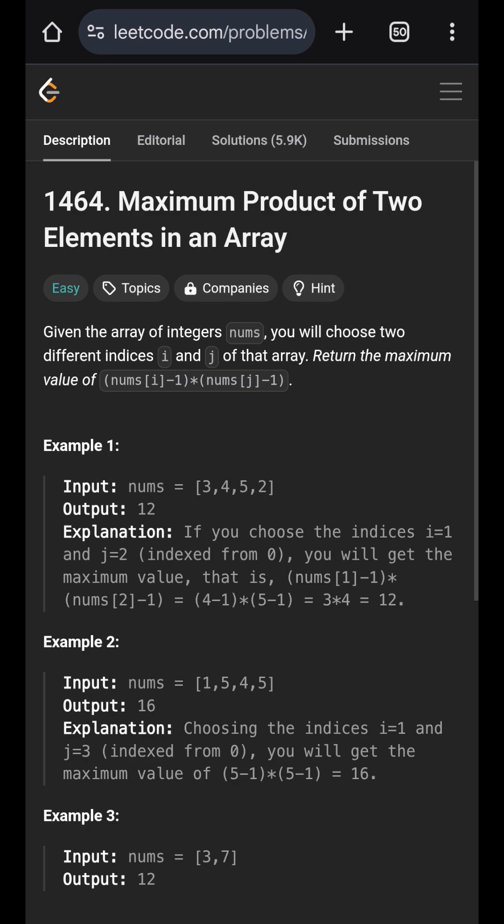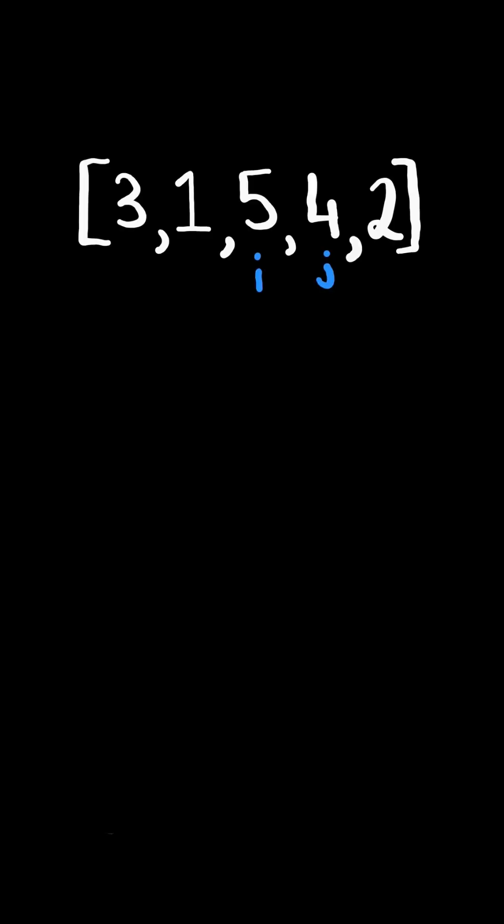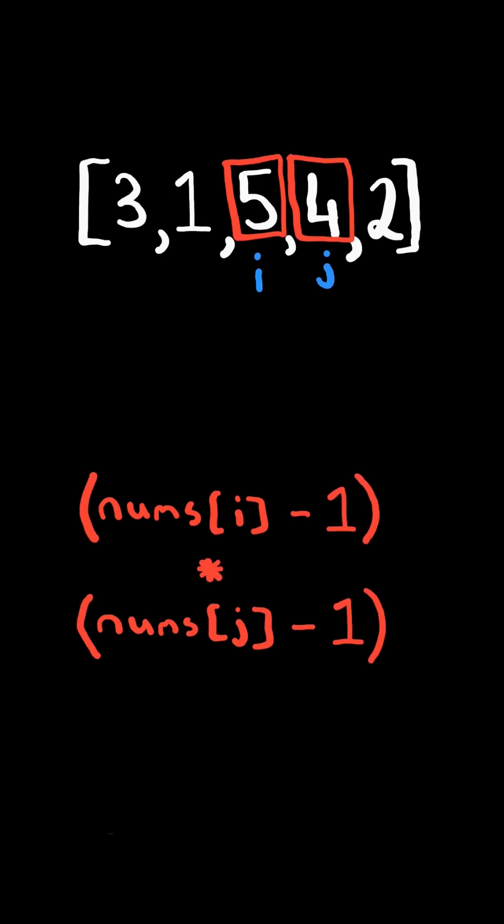Maximum product of two elements in an array. Choose two different indices, i and j, such that the number at those indices, subtracted by 1, and multiplied together, is the maximum.